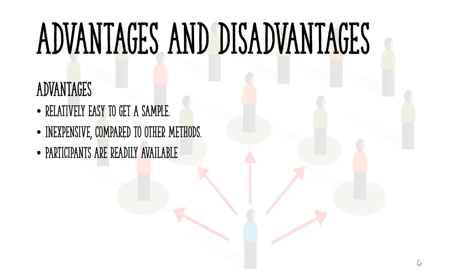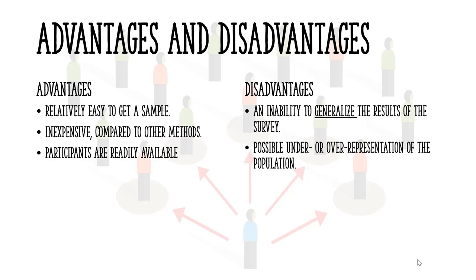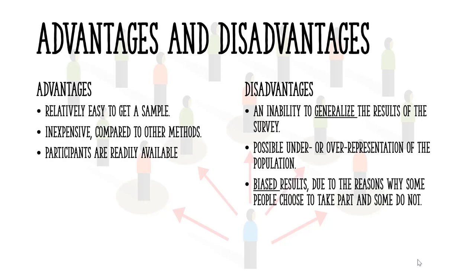As the method cuts out a large part of the population, this leads to several issues: an inability to generalise results of the survey to the population as a whole, the possibility of under- or over-representation of the population, and biased results — due to reasons why some people choose to take part and some do not.